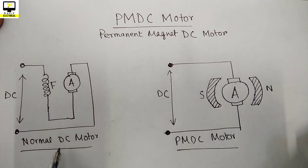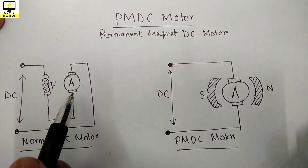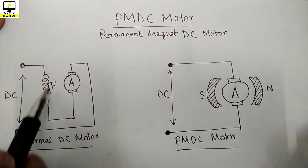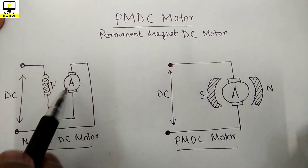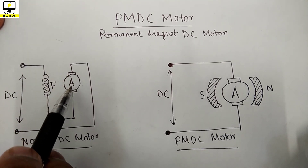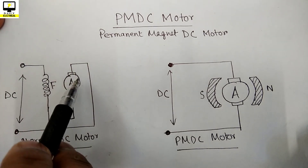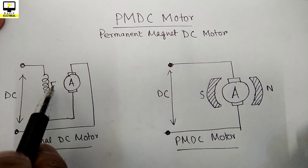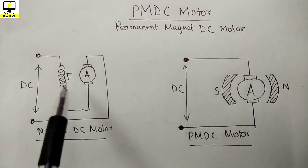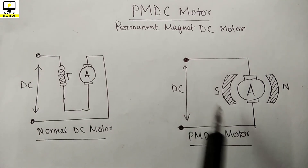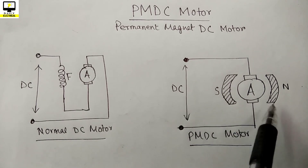In case of a normal DC motor, there is a field coil and an armature conductor. Because of this field coil, electromagnetic induction occurs and an electromagnetic field is generated, and the armature works as a closed conductor — when current passes through the armature it starts rotating in reaction with the field flux. But in case of a PMDC motor, no field coil is used; instead, permanent magnets are used to generate the magnetic flux.